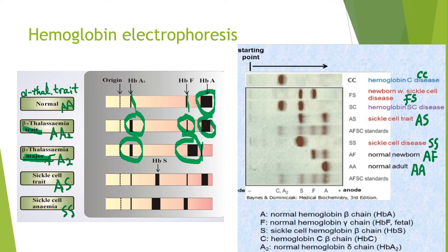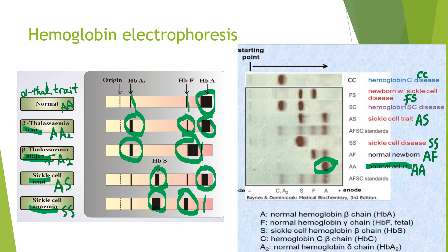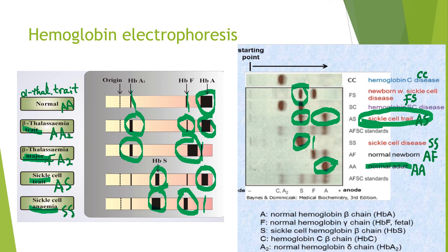Regarding sickle cell — which we haven't studied yet — in sickle cell trait you see mainly hemoglobin A with an increased level of hemoglobin S. In sickle cell anemia (SS disease), you see mainly hemoglobin S with increased hemoglobin F but no hemoglobin A. In the real photo, normal adults show mainly hemoglobin A; sickle cell disease shows mainly hemoglobin S with some hemoglobin F; sickle cell trait shows mainly hemoglobin A with increased hemoglobin S. In a newborn with sickle cell disease, you see high hemoglobin F that will gradually be replaced by hemoglobin S. Thank you for watching.